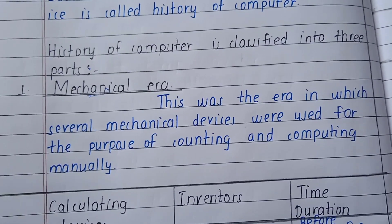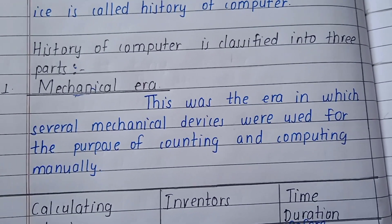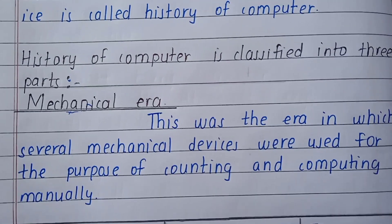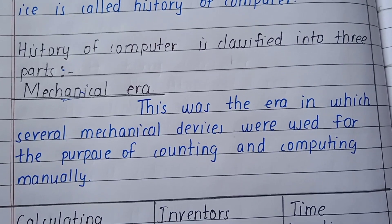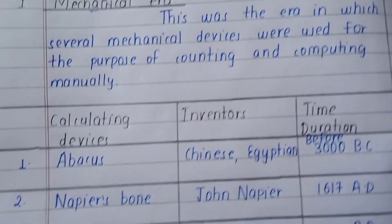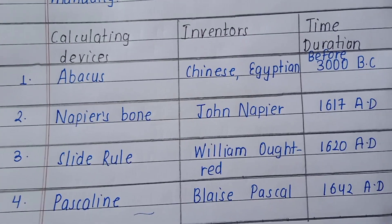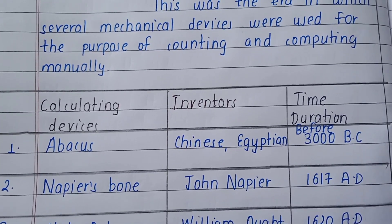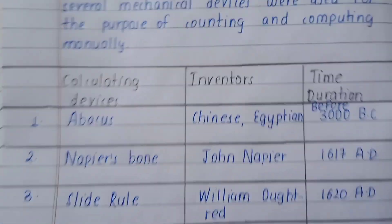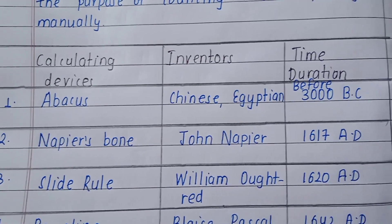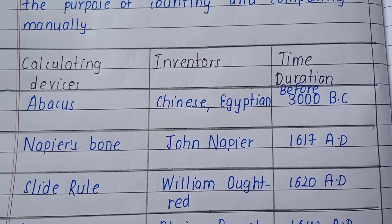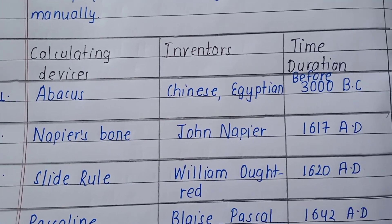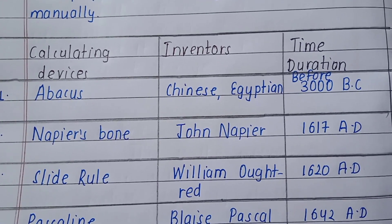The first part is the mechanical era. This was the era in which several mechanical devices were used for the purpose of counting and computing manually. A table is given listing the devices used in the mechanical era, the inventor's name, and the time duration. The first device is the abacus, which was developed by the Chinese and Egyptians before 3000 BC.